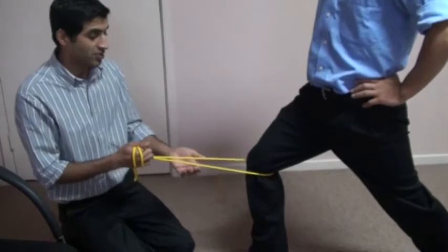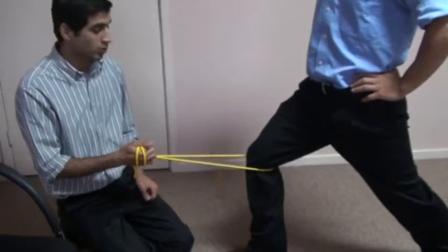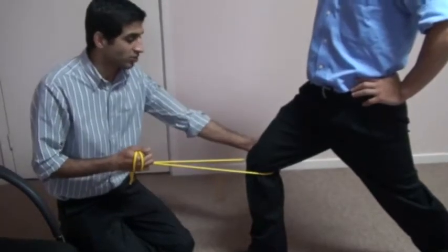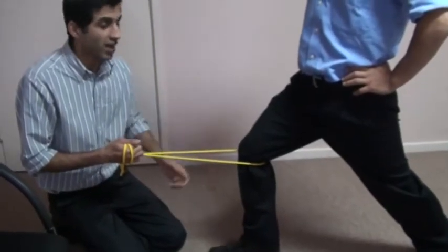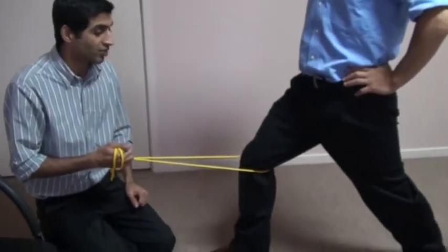You need a theraband which you can tie to a tree in the backyard, a staircase, or somebody can hold it like I'm holding. So you start with the knee slightly bent, and the only thing you have to do is straighten the knee against the resistance of the band.